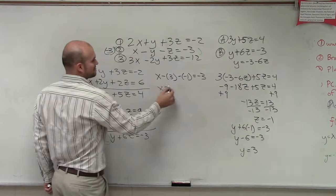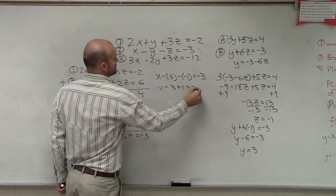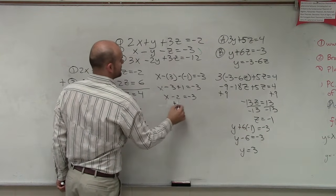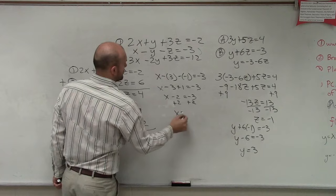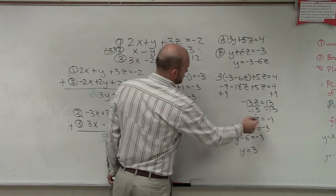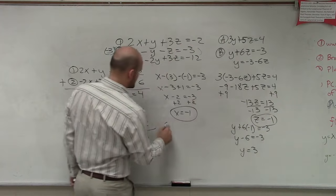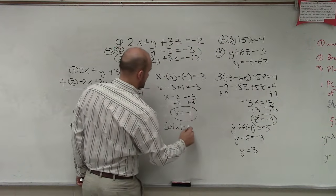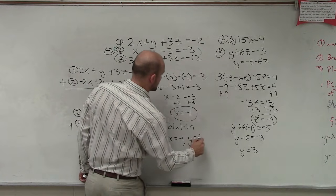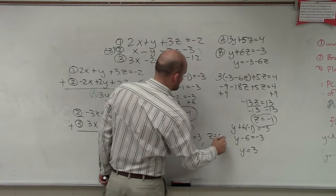I'm going to pick this one because it has the least amount of exponents. So therefore, I have x minus 3 plus 1 equals negative 3. x minus 2 equals negative 3. x equals negative 1. So your solution is x equals negative 1, y equals 3, and z equals negative 1.